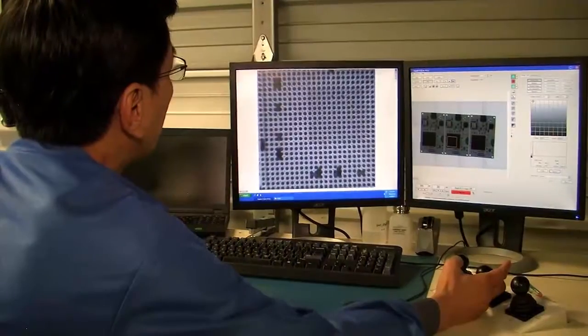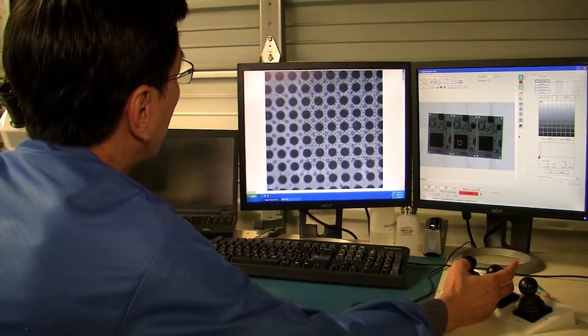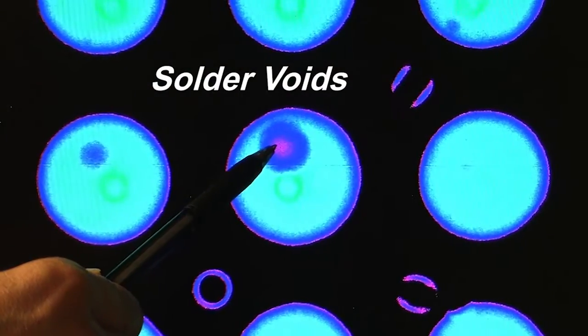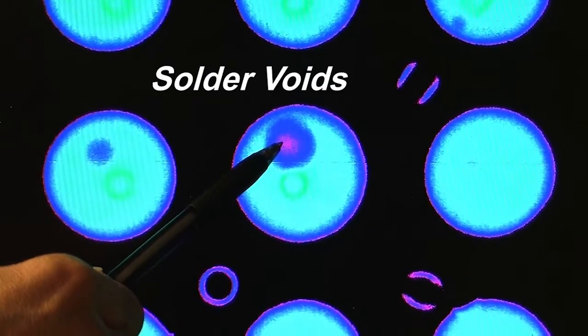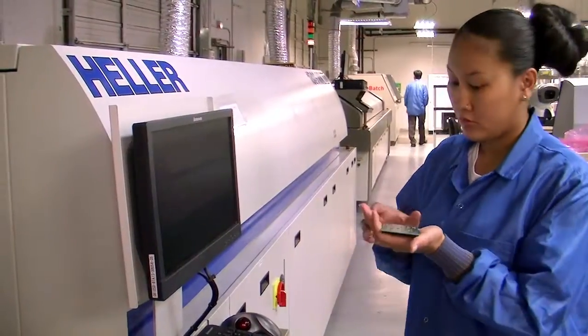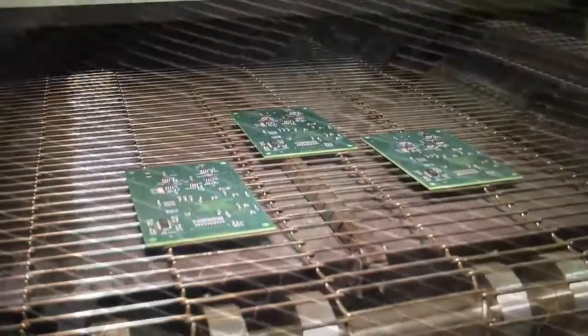Looking at the BGA from the top down, operators carefully examine the solder to see if there are any voids or empty spaces in the solder. Voids are created when the PCB is run through the reflow oven too fast or too slow.